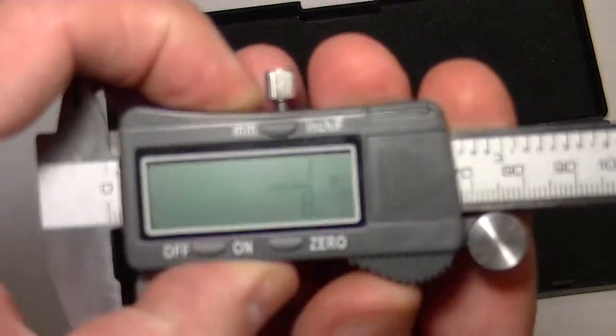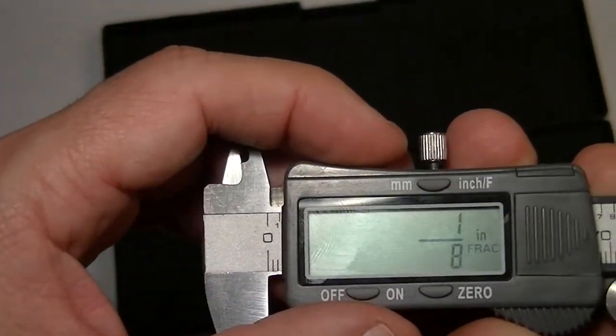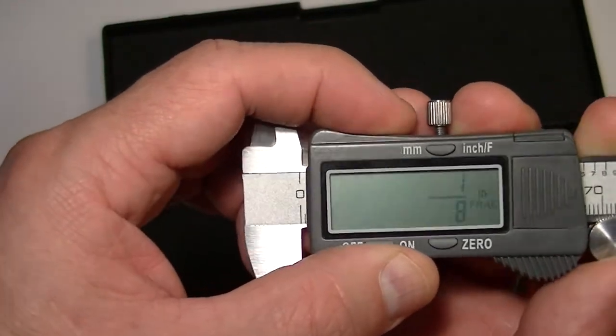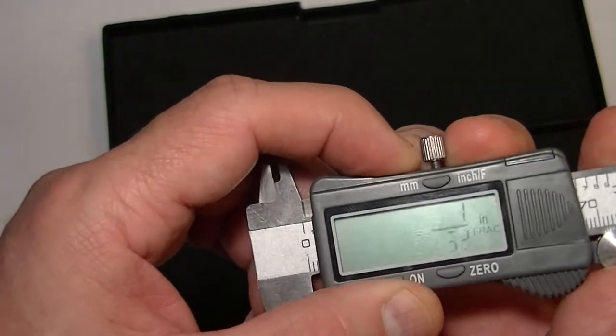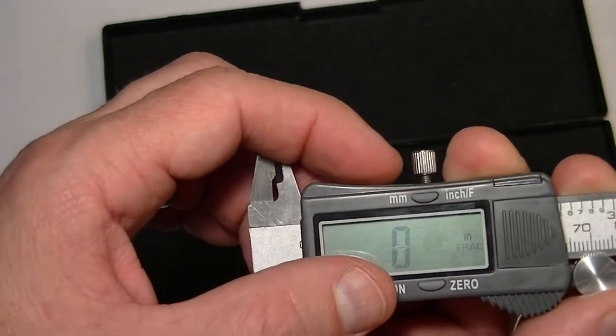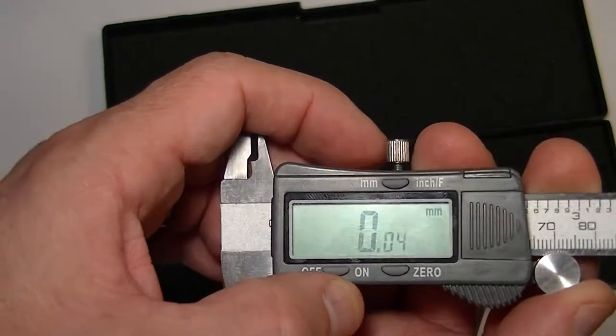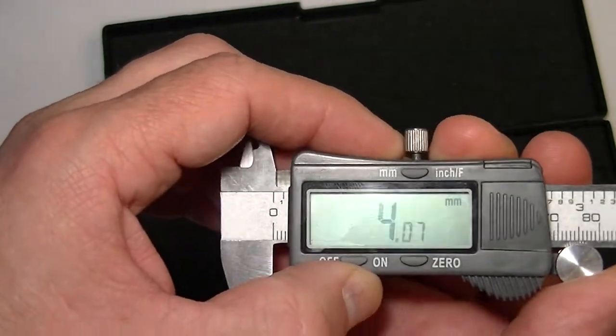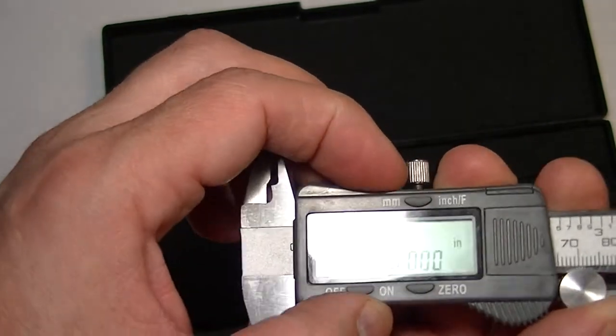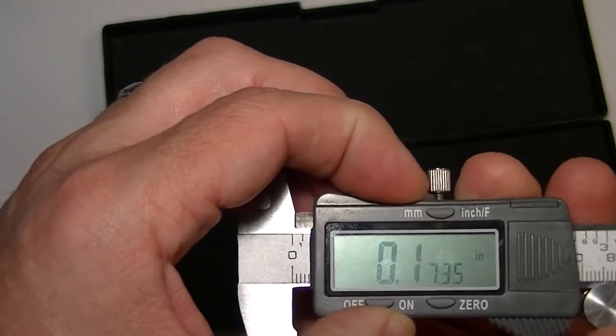Alright, so let me show you that up close. I'm getting a little bit of glare there. So there's your inch fractionals. As you can see, it's a six inch caliper so it goes to six inches. There's your millimeters. And there's your inches in decimals.